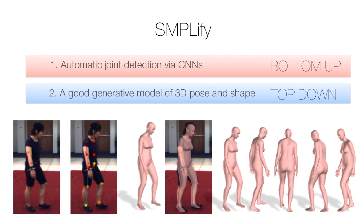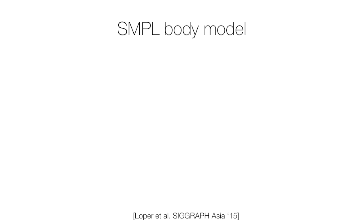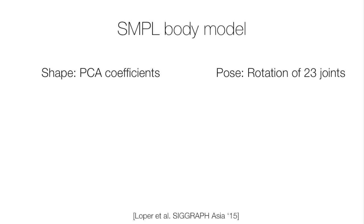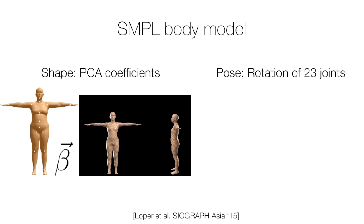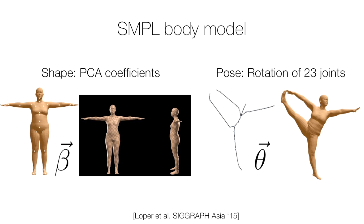We call our approach SMPLIFY. For the CNN stage, we use a recently published method called DeepCut, which outputs a set of 2D joints with confidence values. Note that you could replace this with any 2D joint detector. For the 3D generative model of humans, we use SMPL, where the human body is parameterised by shape and pose. The shape is characterised by the coefficients of a PCA shape space, beta. The pose is represented by the relative rotation of the 23 joints in a kinematic tree, theta.